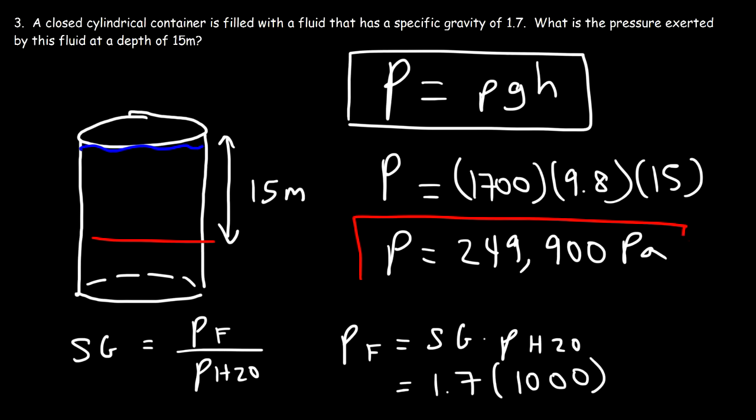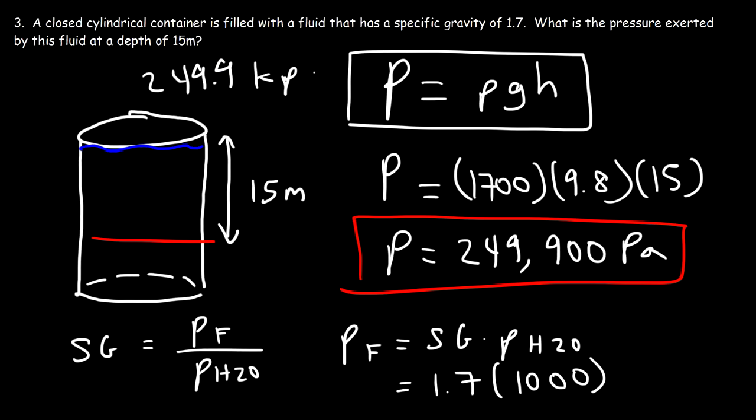Dividing by 1,000, that's approximately 249.9 kilopascals.